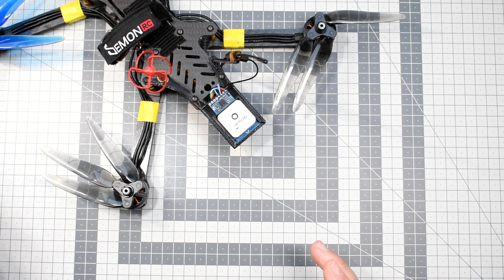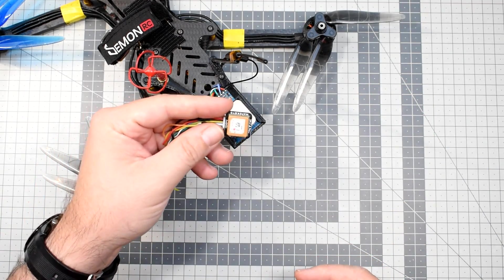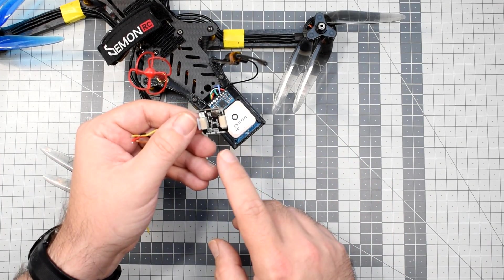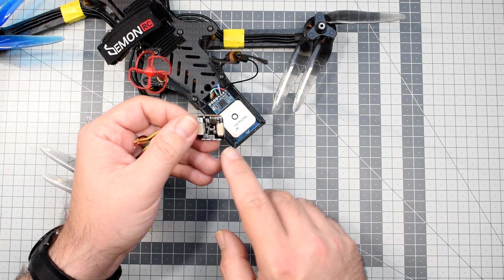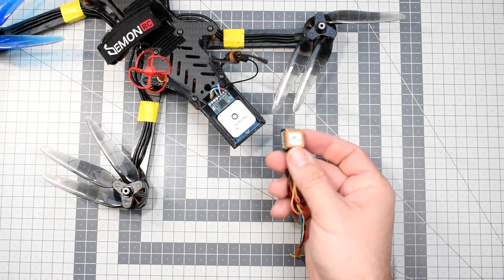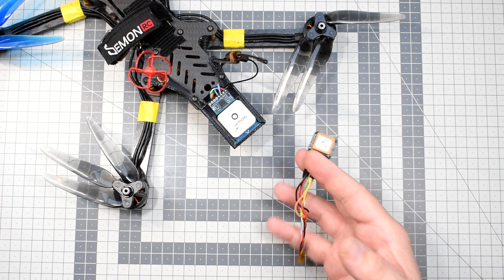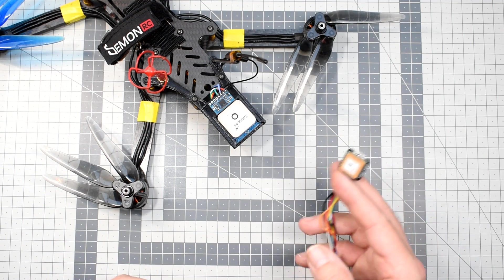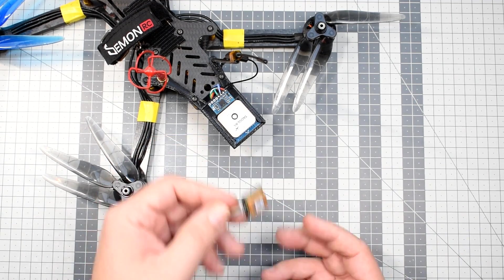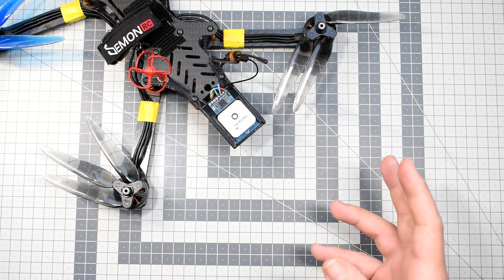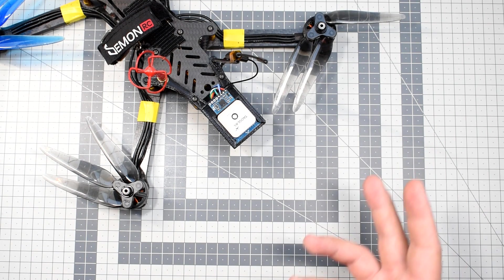So far, GPS in the offer of Mateksys was known from this series, which is M8Q, equipped together with the HMC5883 magnetometer, which was a super nice, super small equivalent to the Beitian BN880. But with relatively small antenna there were always some problems with the accuracy and sensitivity of the receiver.